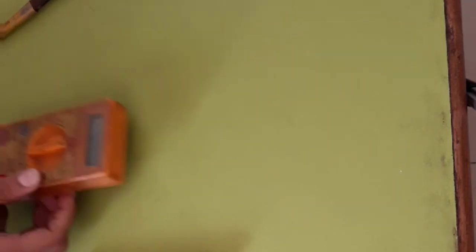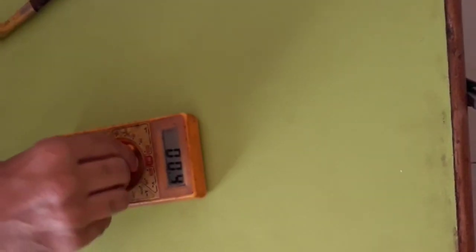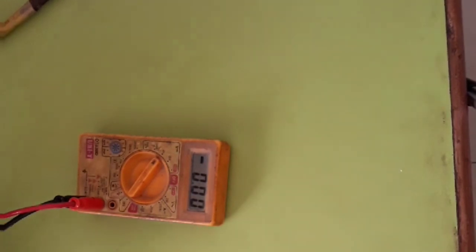Now we will measure the potential difference of this battery. If it shows at 4.8 volts, it means it's fair, but in fact it has been spoiled, so it will not show that potential difference.